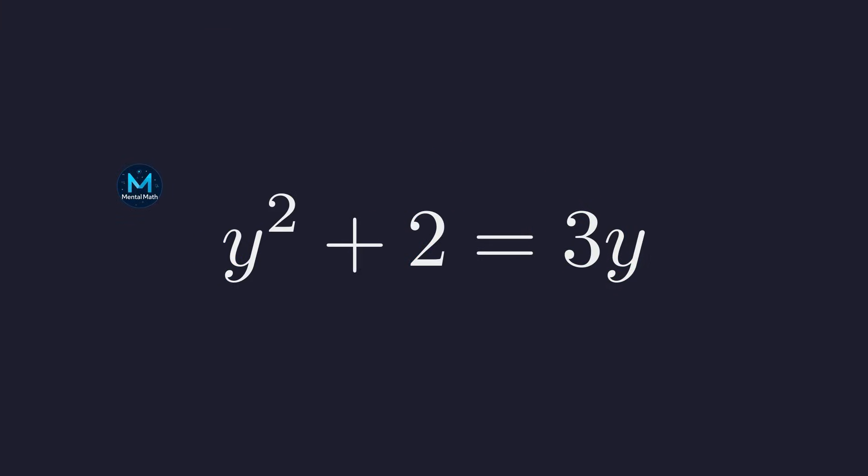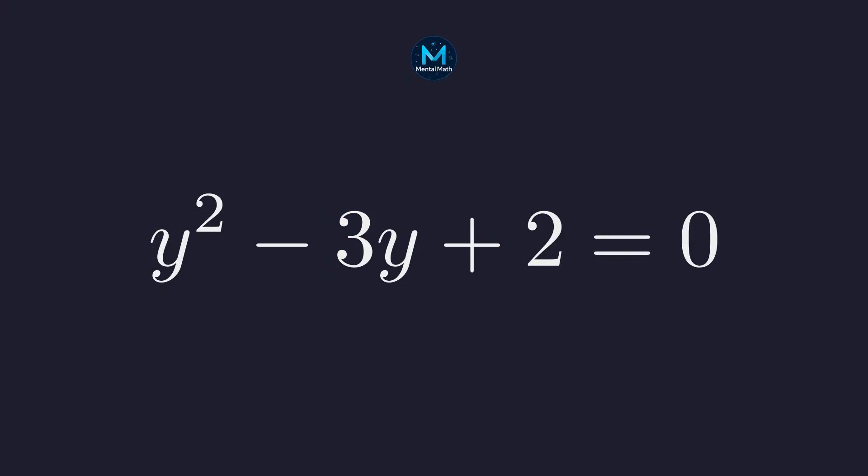y squared plus 2 equals 3y. To solve this, we must first arrange it into the standard form ax squared plus bx plus c equals 0. Subtracting 3y from both sides gives us y squared minus 3y plus 2 equals 0.